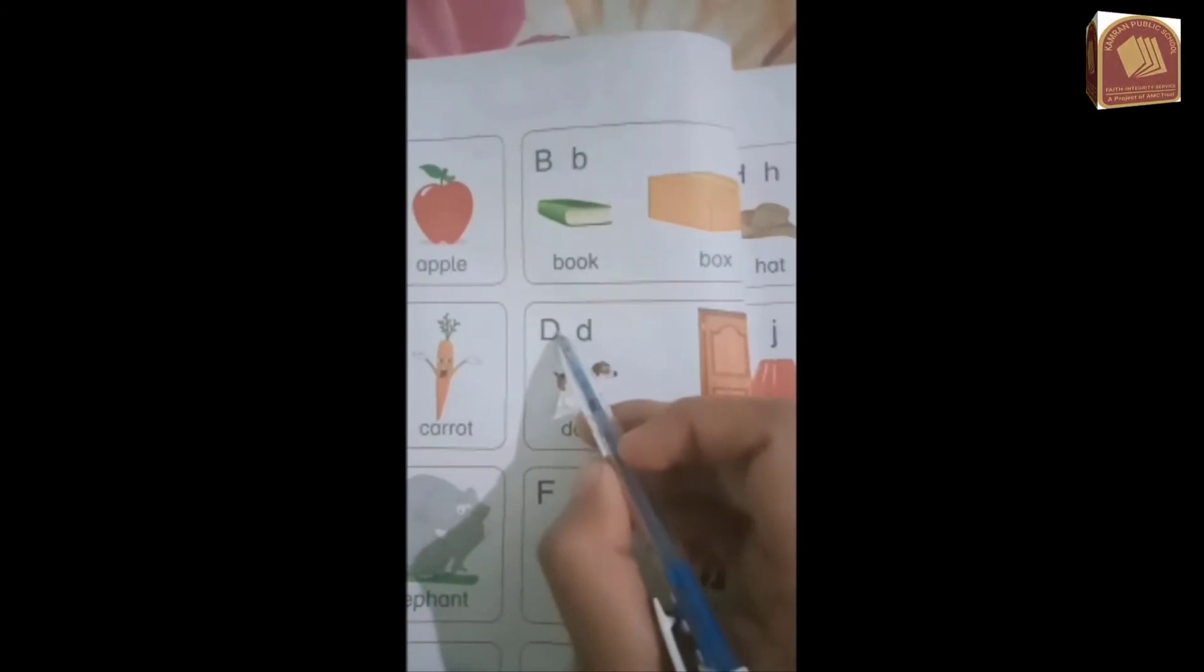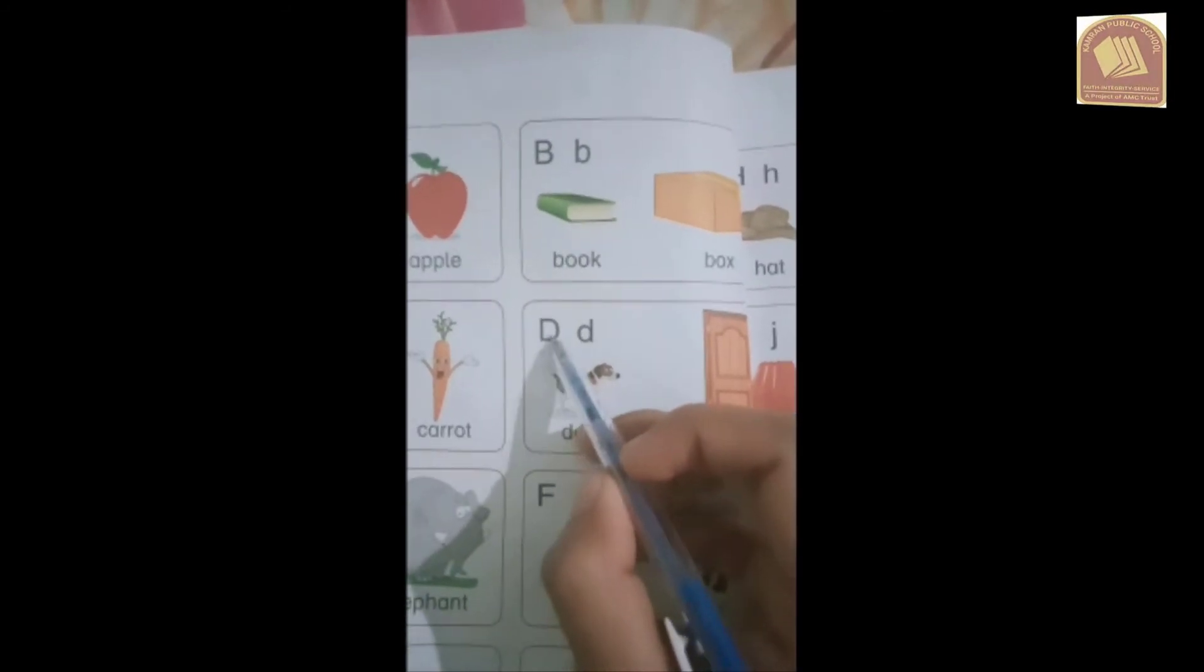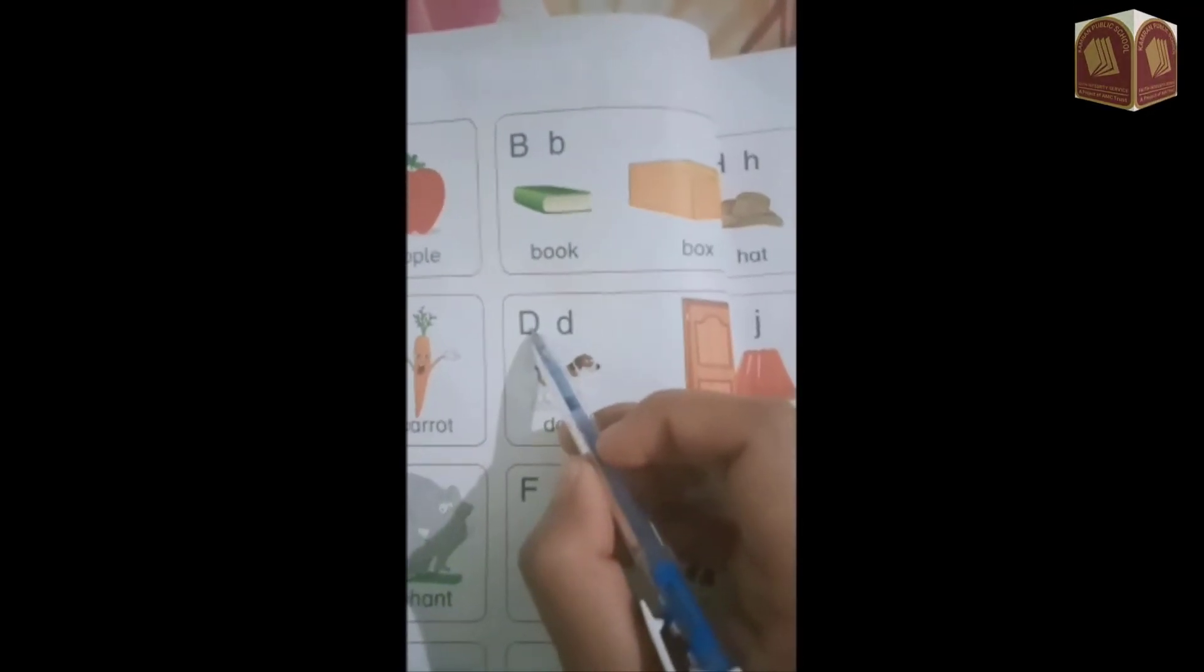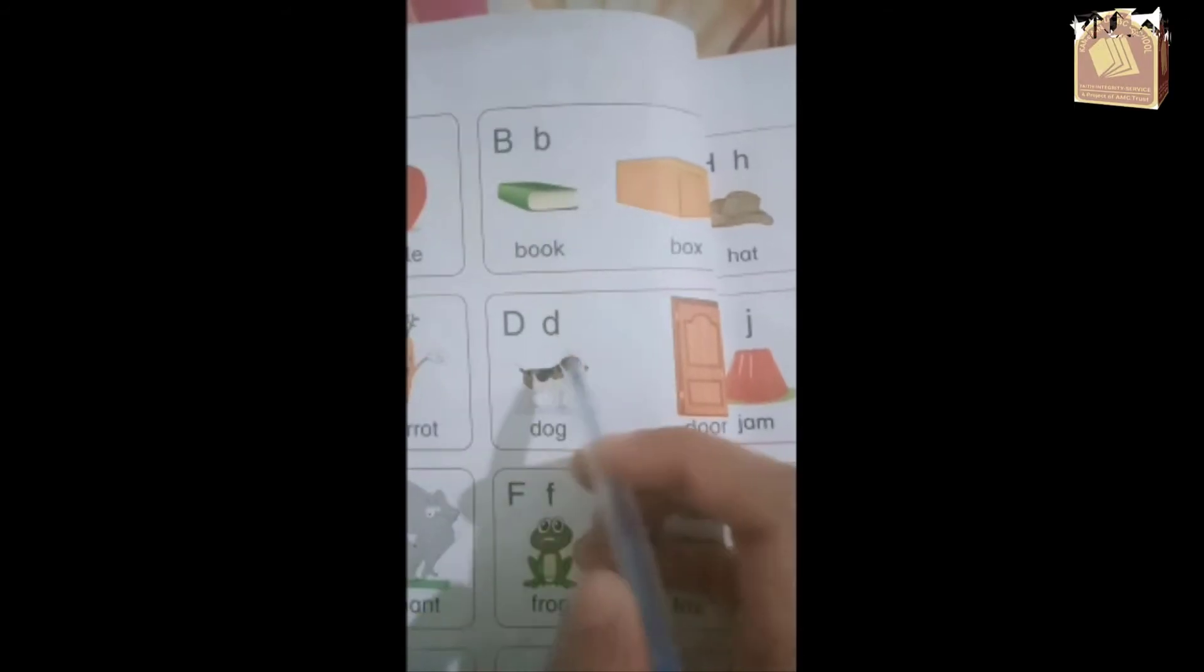D is for dog. Repeat after me: D is for dog. Good.